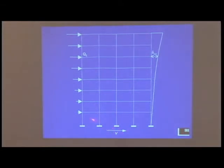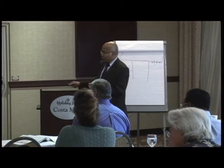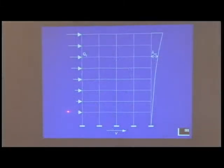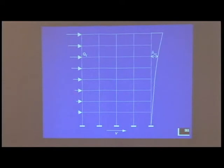Having obtained the design base shear, we distribute it along the height of the structure in the manner prescribed by the code. Once we have done the distribution, we do not have the base shear to work with anymore. What we have now are lateral forces acting at the various floor levels. The next thing we do is an elastic analysis of the structure under those distributed forces. That analysis gives us two very important things.